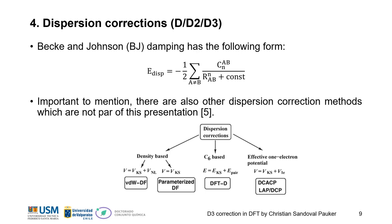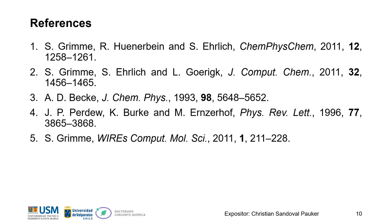To summarize, there are density-based methods, one-electron potential methods, and the C6-based methods, which are the DFT-D correction methods. There are some references for this presentation, and thank you.